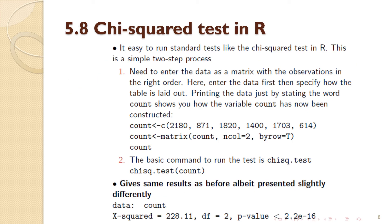To run the chi-squared test in R, this is relatively straightforward since it's a standard test that R is designed for. You need to enter the data as a matrix with the observations in the right order. Using the matrix command, you specify how the matrix is set out — in this case going in order with two columns. If you print the word 'count', R will show you the table of counts from the previous slides.